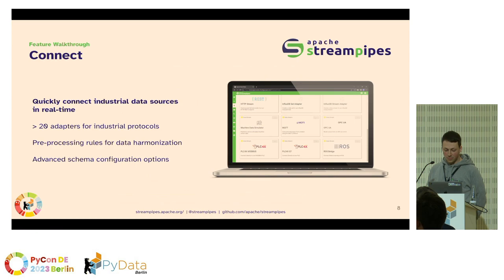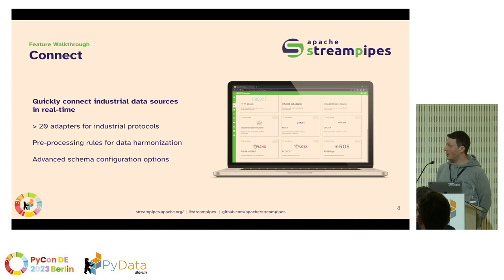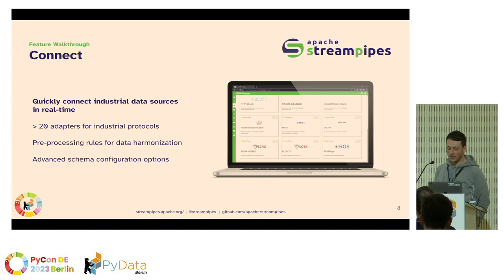The first core feature is StreamPipes Connect — that's where you connect a data source for the first time. Connect is a marketplace for all the adapters available in StreamPipes. It allows you to quickly connect industrial data sources in real time. We have around 20 adapters currently supported, and we also allow you to apply pre-processing rules for data harmonization directly at this point — for example, if you want to transform a data point's unit of measurement.